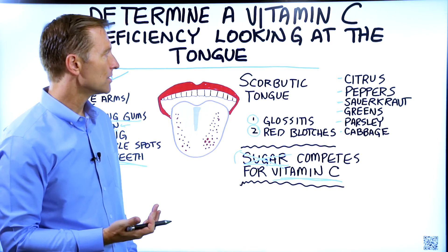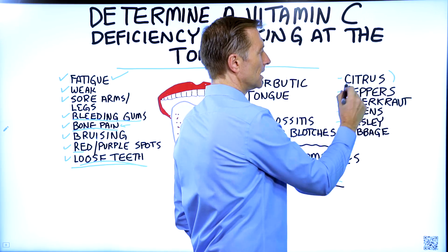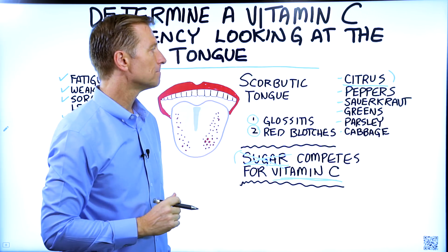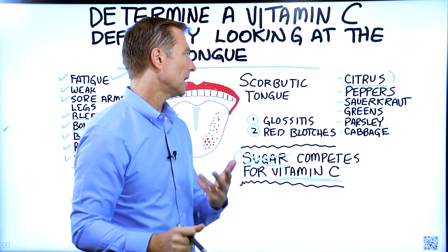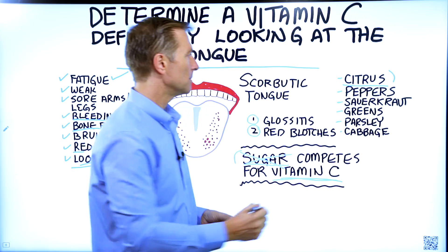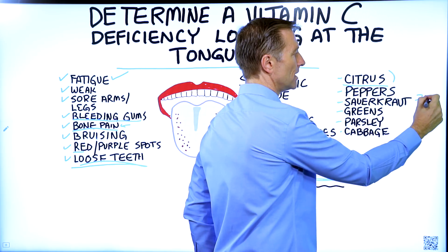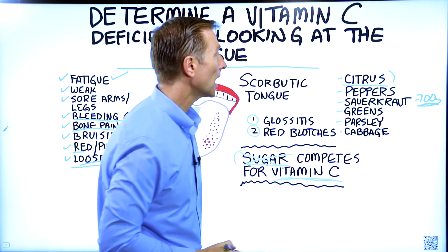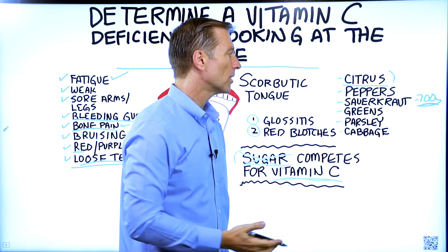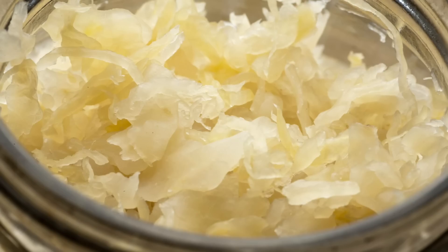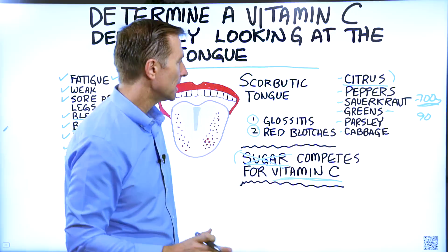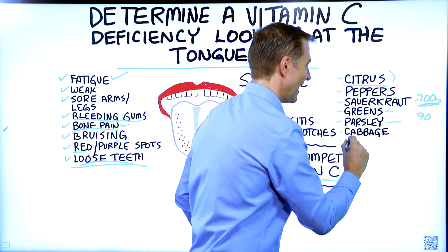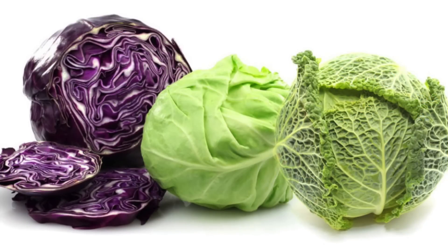Here are some good foods that have higher levels of vitamin C. Citrus, like lemon juice, but it has to be raw because heat destroys it. Peppers — red peppers, green peppers. Sauerkraut probably has the most vitamin C; a good sauerkraut has around 700 milligrams of vitamin C per cup. The RDA for vitamin C is about 90 milligrams, so you're consuming a tremendous amount when you eat sauerkraut. Leafy greens, salads, Brussels sprouts, and broccoli all have vitamin C. Parsley is loaded with vitamin C, and so is cabbage — which is how you make sauerkraut.